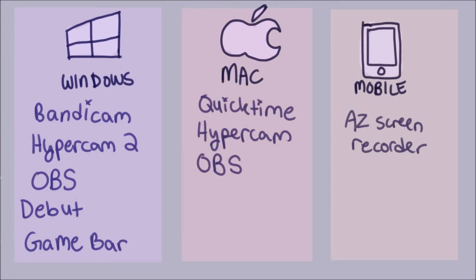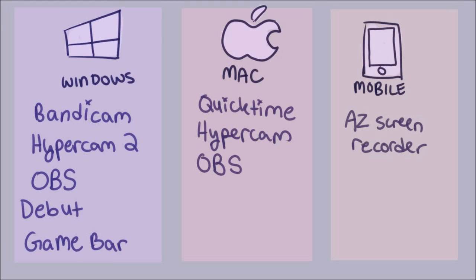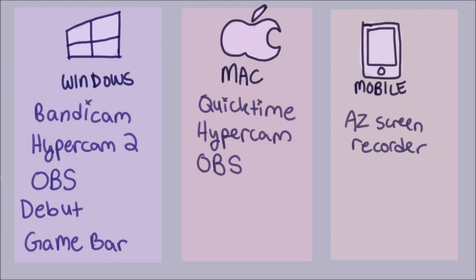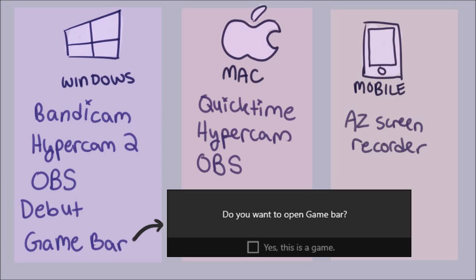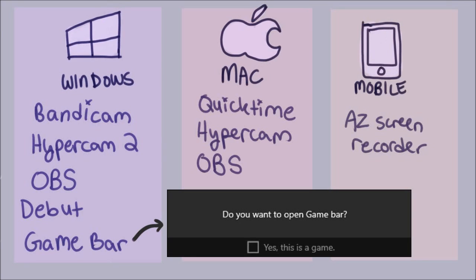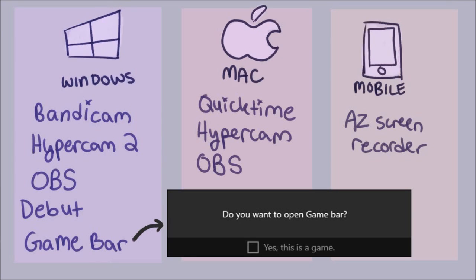So now you've got a way to draw, but you still need a way to record your screen. Here are some free recording programs. Also, if you have Windows 10, you already have a screen recorder on your computer — it's called the Game Bar. By going to your art program and holding the Windows button and G, you'll open up a little pop-up. Even though it's not a game, you have to click yes, and it'll open up a little bar where you can record up to an hour of footage at a time.